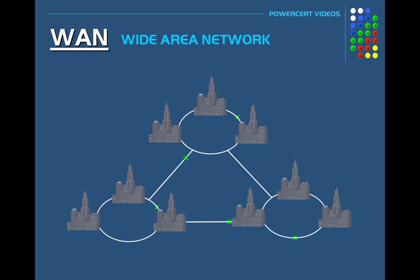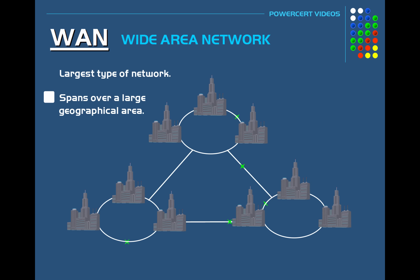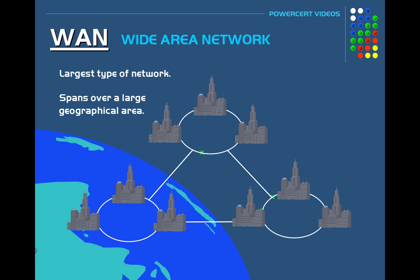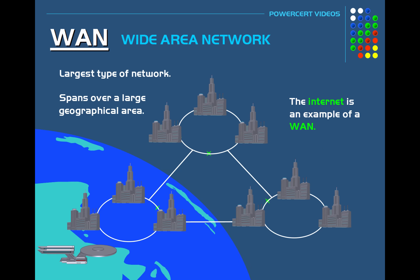Finally, there's the Wide Area Network or WAN. A WAN is the largest type of network. A WAN includes multiple LANs, CANs, and MANs. It's a network that spans over a large geographical area such as a country, continent, or even the entire globe. A good example of a wide area network is the internet.